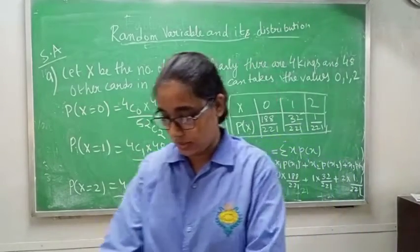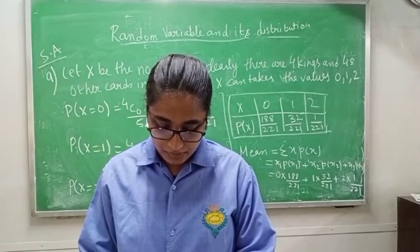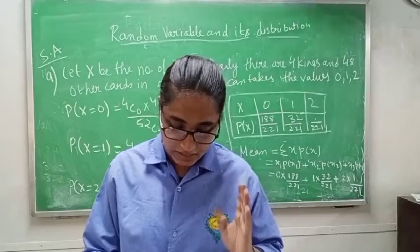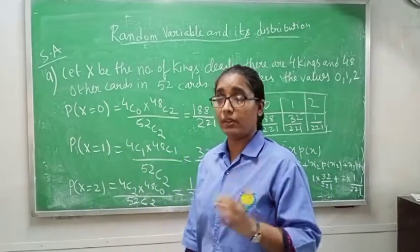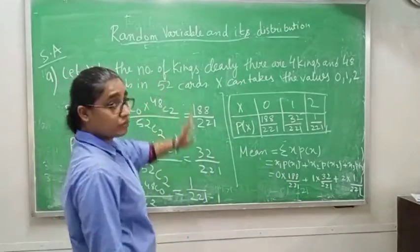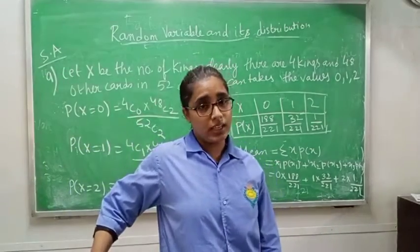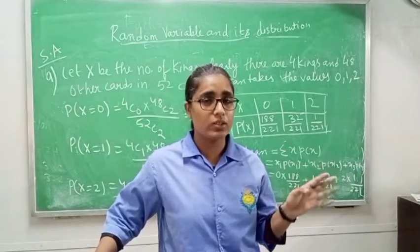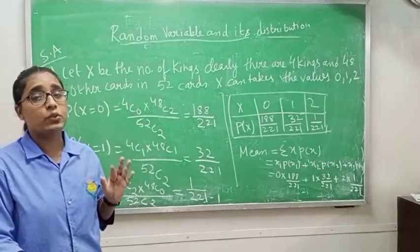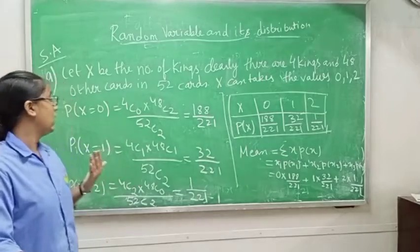Class 12, short answer question number 9. Two cards are drawn simultaneously without replacement from a well-shuffled pack of 52 cards. Find the mean, variance and standard deviation of the number of kings. There are 4 kings and 48 other cards in the pack.